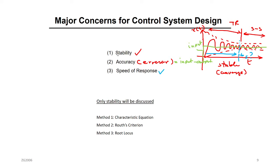Now, in this course, we're going to focus only on stability. To discuss the stability, there are three methods. Method number one is very simple: when you have a simple characteristic equation, you solve for the roots of the characteristic equation and check the real part. If the real part is negative, you're good; if it's positive, no good. Then we will move on to method number two for higher-order characteristic equations. Method three is the most popular and most common method used in control to design the controller for the transient response. We will talk about this at the end of the chapter.